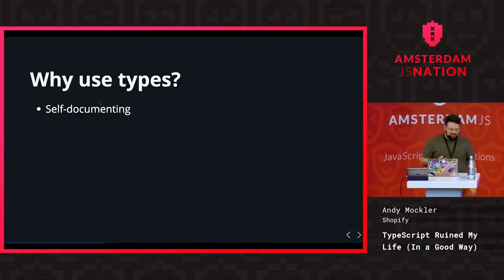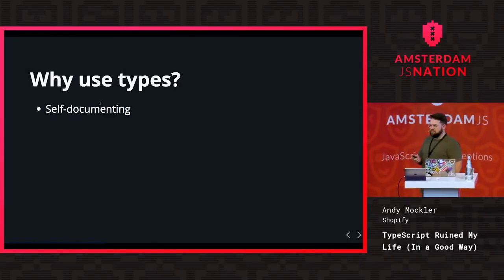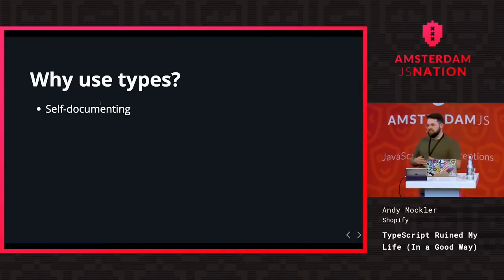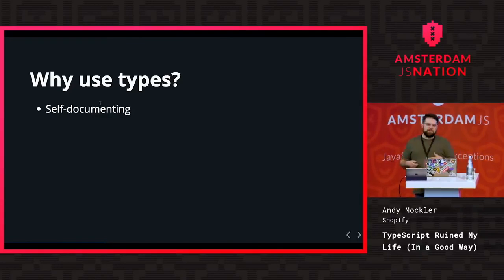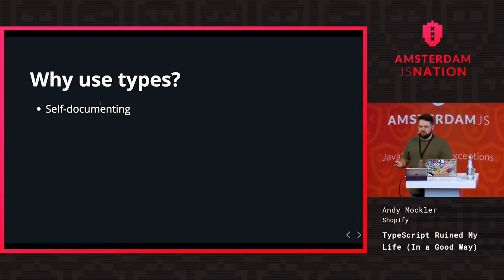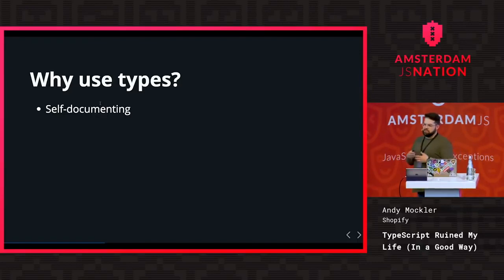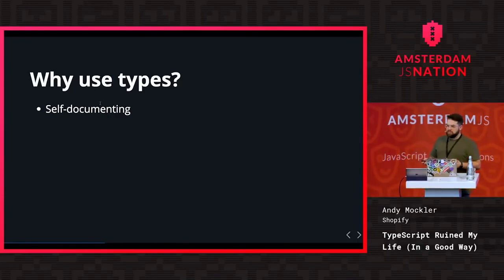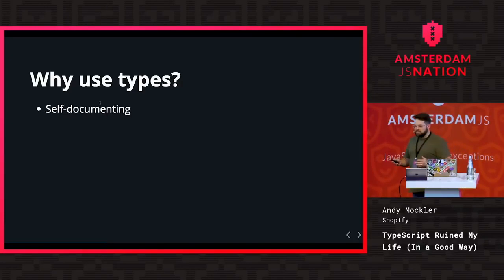The most important reason to use types is that they make your code way more self-documenting. Documentation is really hard — you might write a readme or inline comments, but you have to remember to update them and they can get out of sync. With a type system, you're annotating the actual code, so you know it's always in sync. If you say something is a string and the TypeScript compiler passes, that thing is going to be a string.